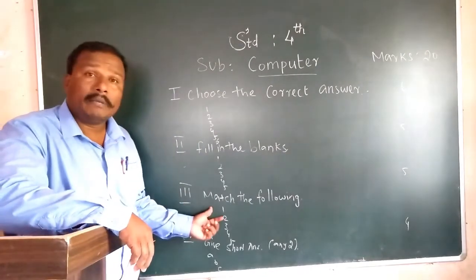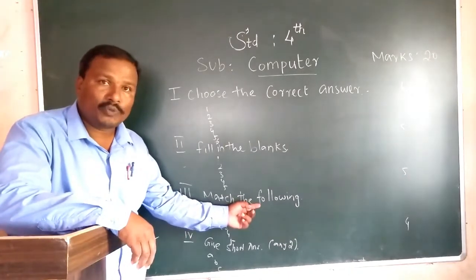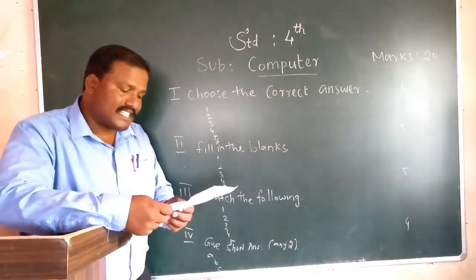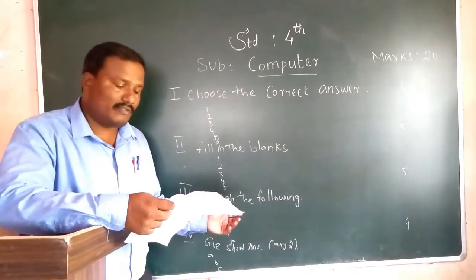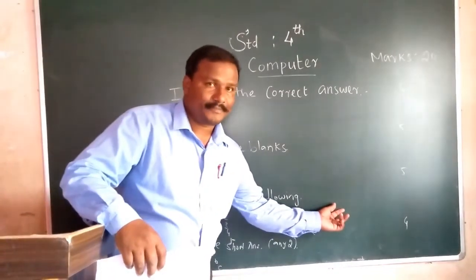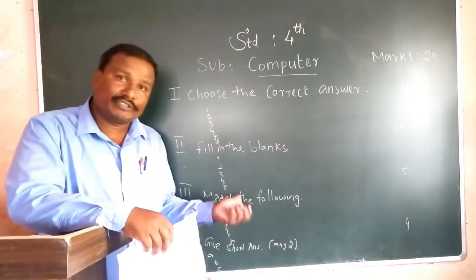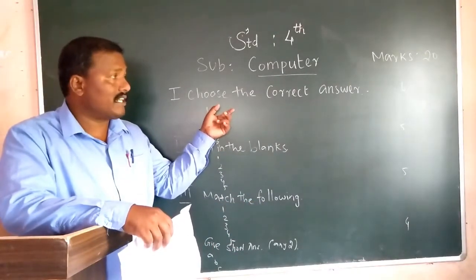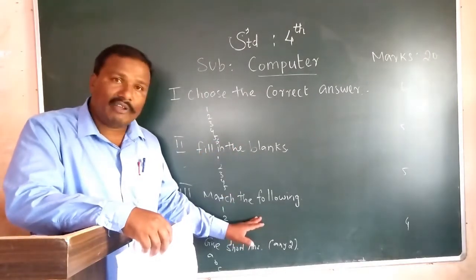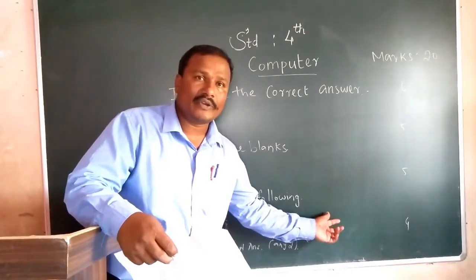Roman numeral III: Match the following. Write this title into the answer sheet. Then write the question with the answer. For example, question number 1: 'Scanner' — write the question on the left side and the answer on the right side. In match the following, you can write question with answer, but for choose the best answer and fill in the blank, write only the answer.